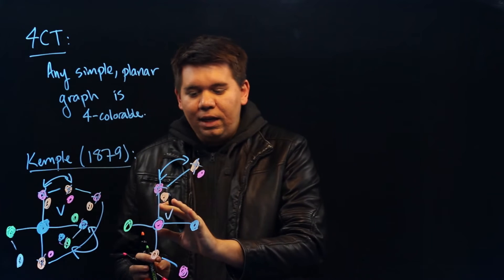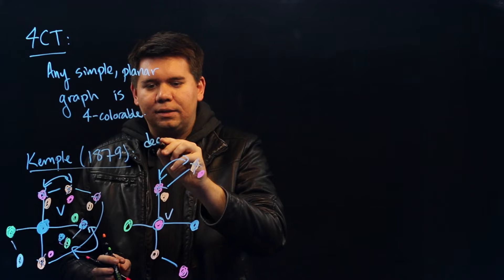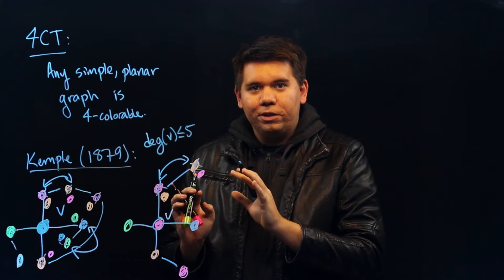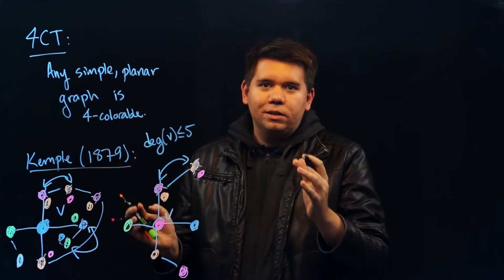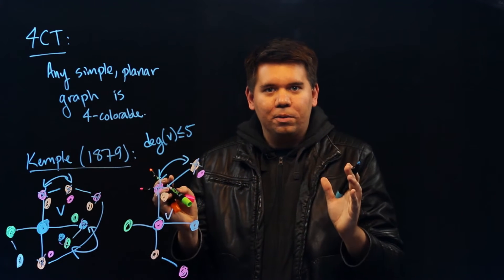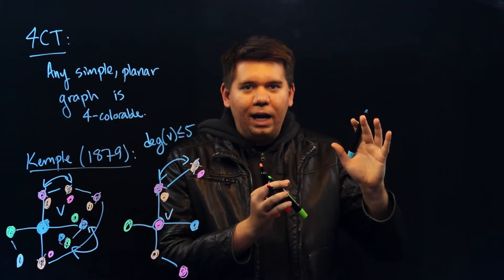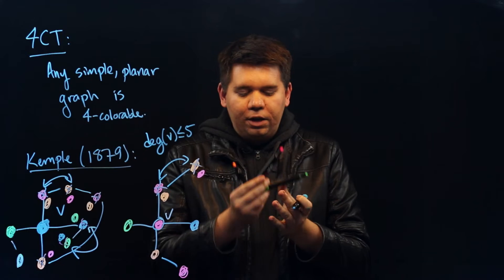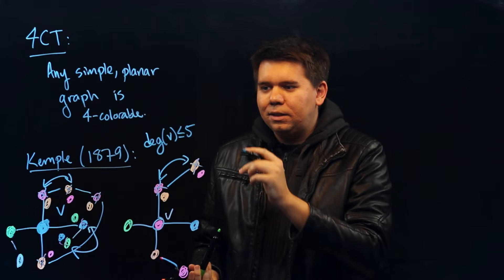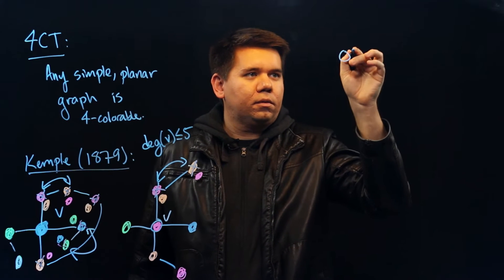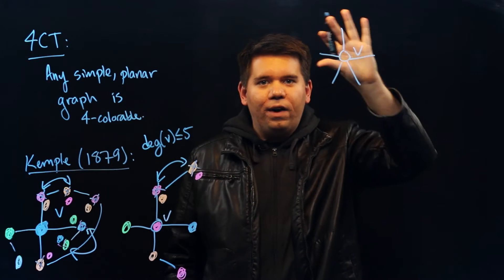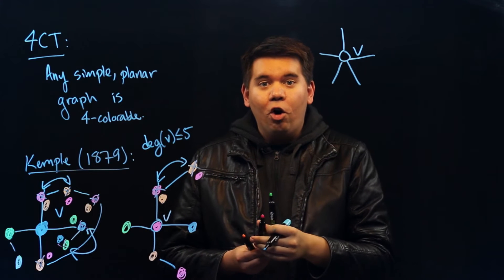But wait — we said that V is a vertex of degree 5 or less. We've only done the case where the degree of V is 4. Of course, if the degree was 3, 2, or 1, then we would easily have a color left over, because we have 4 colors available to us. And if the degree of V was 5 but it only bordered colors that used 3 of the 4 colors, we'd be fine. But the remaining case is: what if we have some vertex V that borders 5 other vertices and those 5 vertices use up all 4 of our colors?